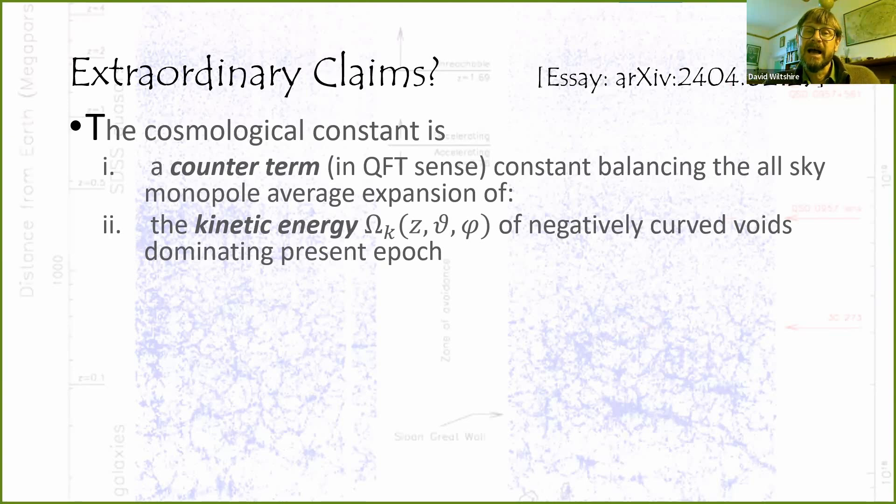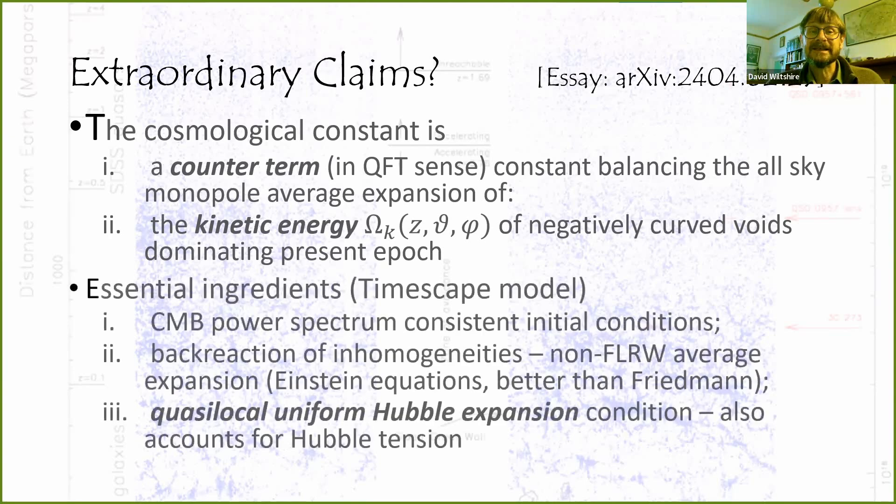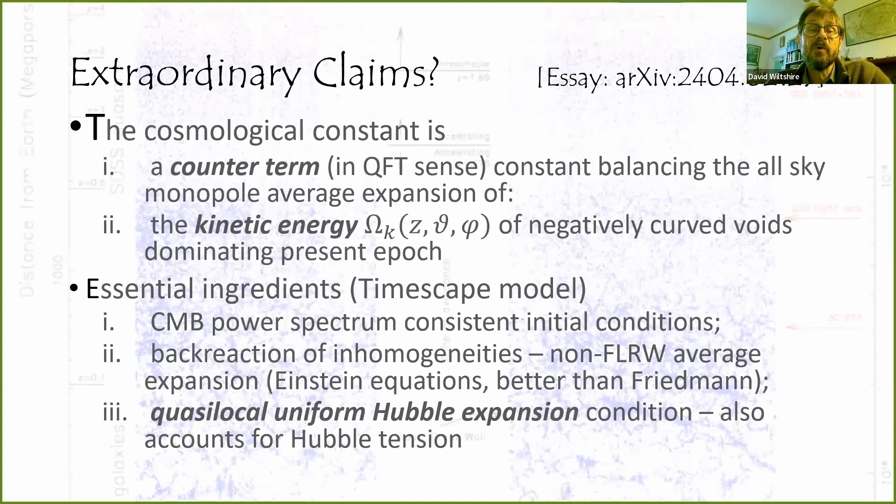To put this together one needs ingredients: a reasonable initial matter power spectrum as constrained by the CMB, back reaction of inhomogeneities. In other words, if you use all of Einstein's equations, not just the Friedman equation, but actually go back to foundations, then the average expansion does not have to be Friedman, Lemaître, Robertson, Walker. It could be something else and that is necessary.